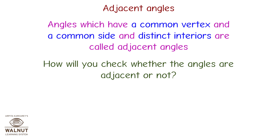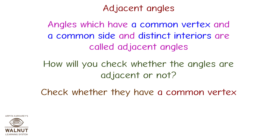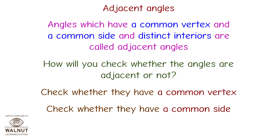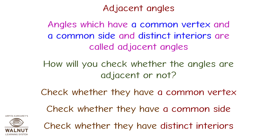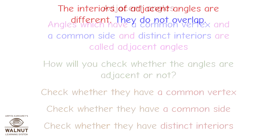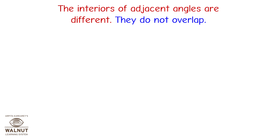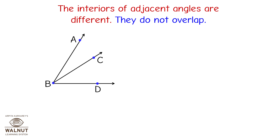How will you check whether two angles are adjacent or not? Check whether they have a common vertex. Check whether they have a common side. Check whether they have distinct interiors — the interiors of adjacent angles are different and they do not overlap.